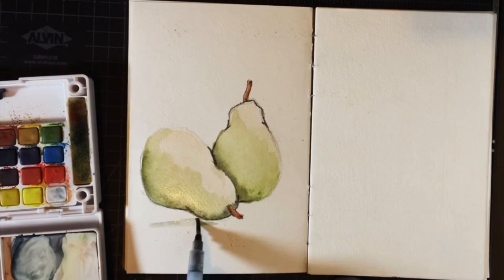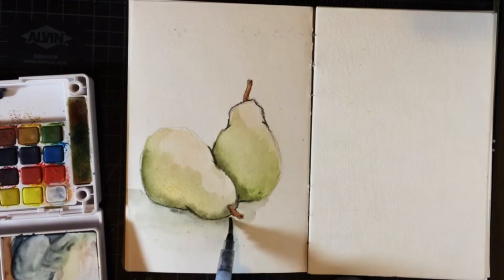Now I use a mix of ultramarine blue and grey for the shadows of the pear. I continue with the same mix for the drop shadows of the pear.